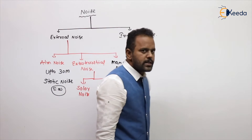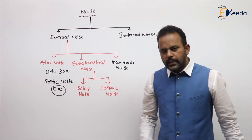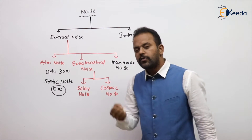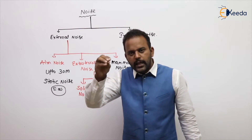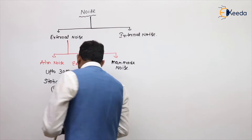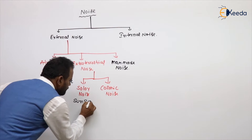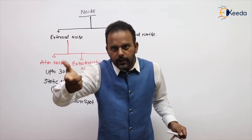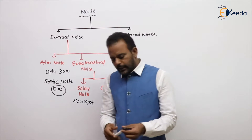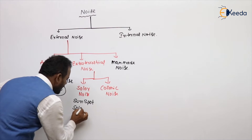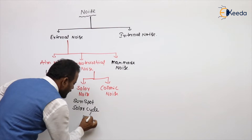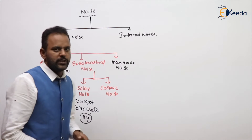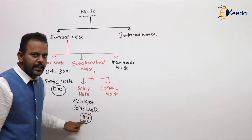What is solar noise? It is the noise due to the sun. There is continuous radio activity going on at the sun's surface, and the noise coming from that is called solar noise. On the sun's surface, where the radio activity is more is called a sunspot. There is also a solar cycle of 11 years, meaning every 11 years that radio activity will change, and the noise level also changes. That is called the solar noise cycle.